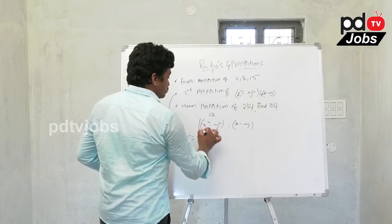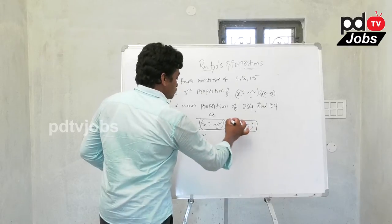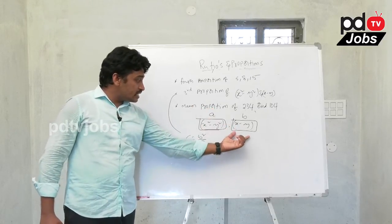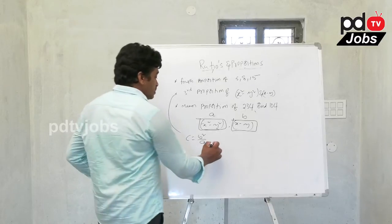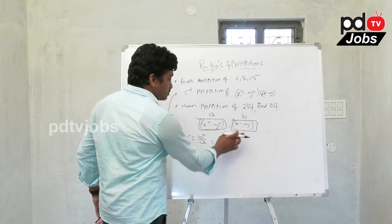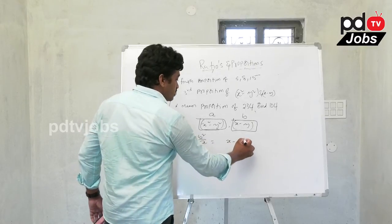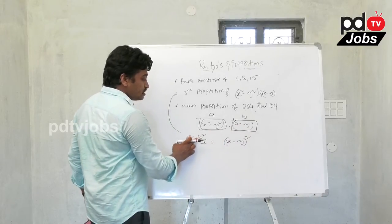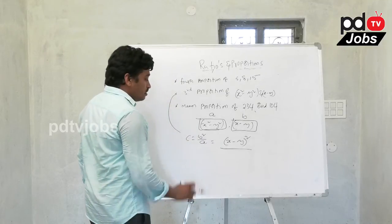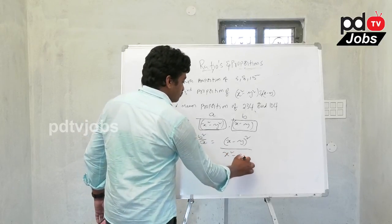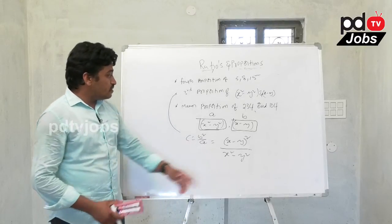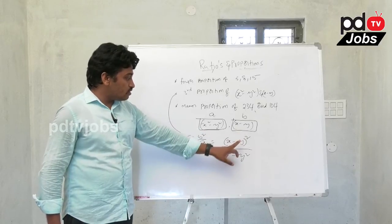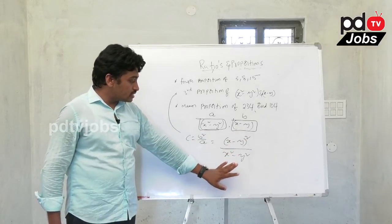The first value is taken as a and the second value is taken as b. So a = x² - y² and b = x - y. Then b² = (x - y)² and we compute b²/a = (x - y)² divided by x² - y².